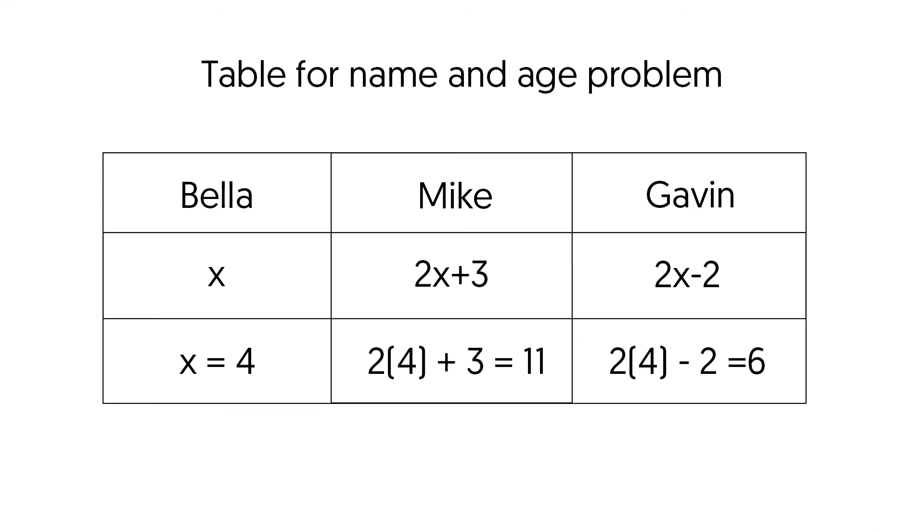let's go ahead and work on step three to solve for the ages of Bella and her brothers. In the last part of the problem, we were told to substitute four for Bella's age. So let's go ahead and say that x is equal to four. If that's a given, then we know Mike and Gavin's age because all we have to do is plug four in for x.